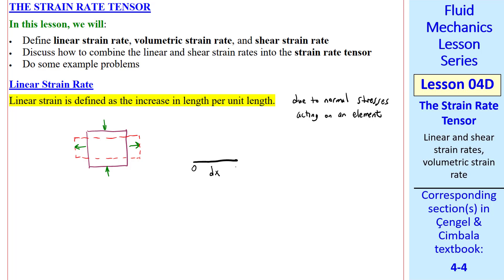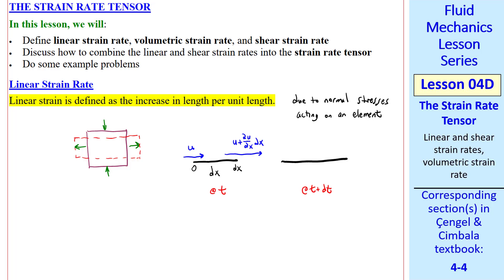Call this location 0 and this location dx. Suppose speed u acts at point 0, and using a truncated Taylor series as we've done before, the horizontal speed at dx is u plus ∂u/∂x · dx. This is at some time t. At some later time, the fluid segment has moved and stretched. This is at t plus dt.